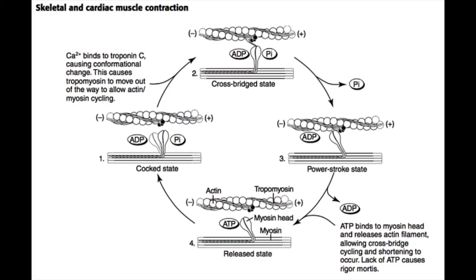Once myosin binds actin, the power stroke occurs, the sarcomere shortens, and the ADP and inorganic phosphate fall off the myosin head. To re-cock the myosin head for another contraction, another ATP molecule is required. The new ATP binds the myosin head, causing it to release the actin filament. That ATP is then hydrolyzed to re-cock the myosin. This explains rigor mortis — in death there is no ATP, so myosin cannot release actin or re-cock itself, leaving the muscle permanently contracted.